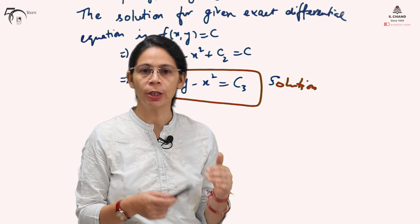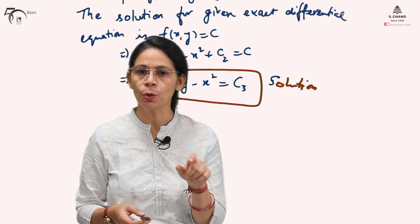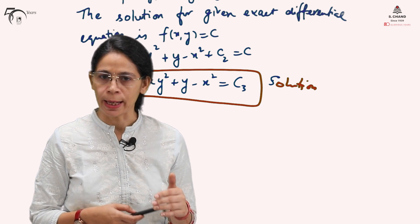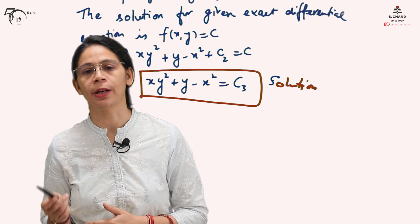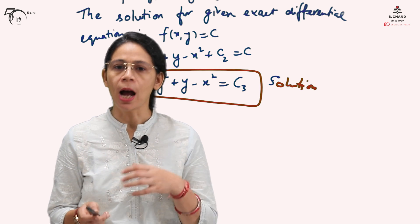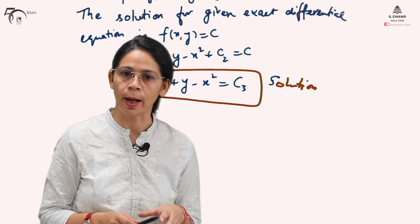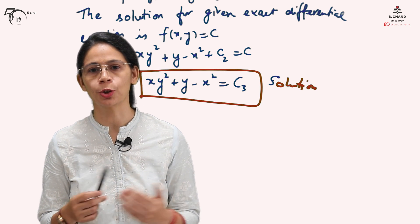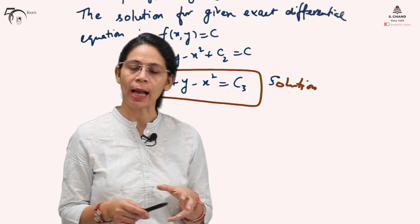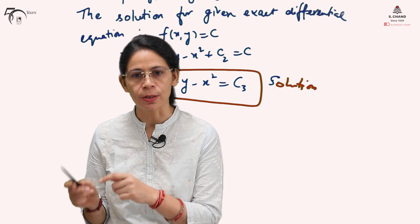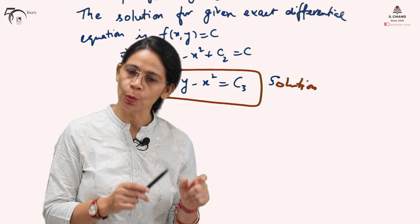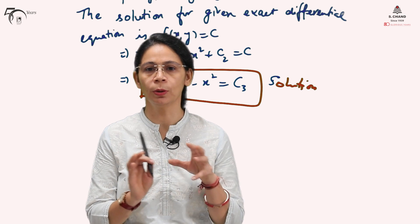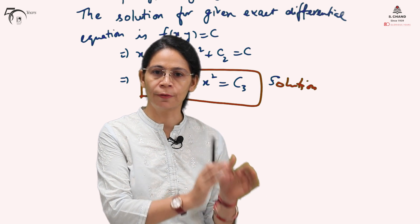The key point is: when integrating with respect to x (starting with M), the constant of integration should be a function of y, not a plain constant c. When integrating with respect to y (starting with N), the constant of integration should be a function of x — one that would give zero if differentiated with respect to y. That is how we obtain the correct solution for an exact differential equation using either method.